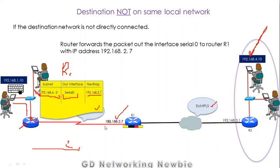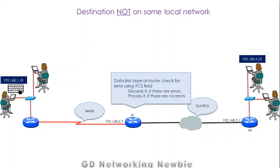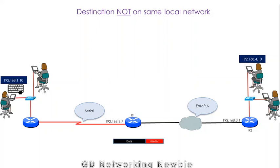The frame has been received by the next router, but the destination is still not connected with router R1. Router R1 receives this frame and checks for errors using FCS. If there are no errors, R1 will process that frame, meaning it will decapsulate it — removing the HDLC header and trailer — and retrieve the IP packet. In that IP packet there will again be an IP header containing the same destination address.